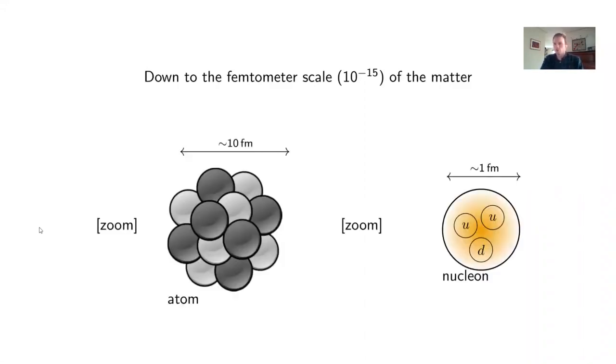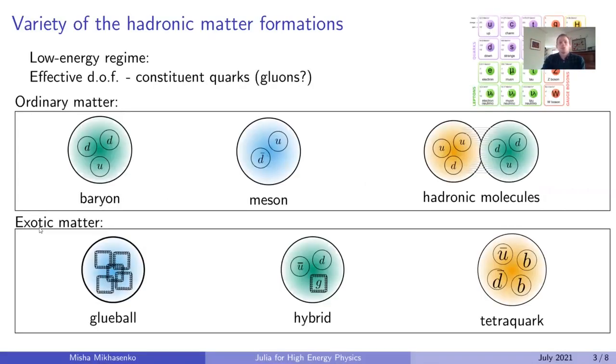The hadron spectroscopy goes down to the centimeter scale and studies the properties of matter. Atoms are made of protons and neutrons, which also have internal structures. And in addition to the regular matter types, we have strong evidence for the existence of exotic matter: tetra-quarks, penta-quarks, you might have heard of them.